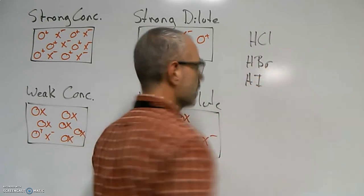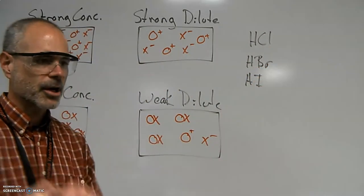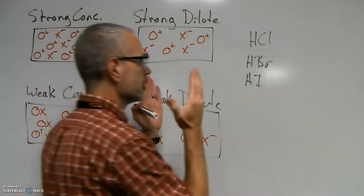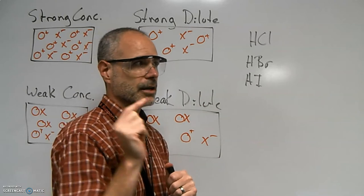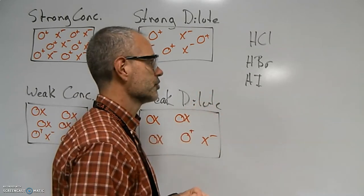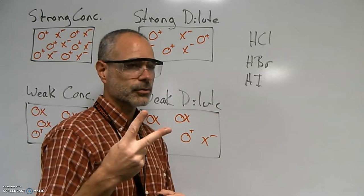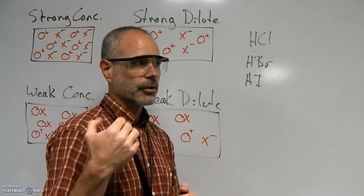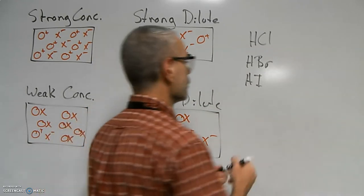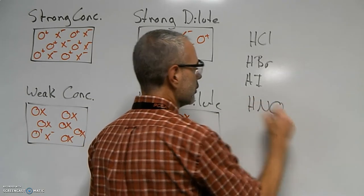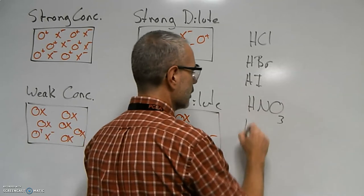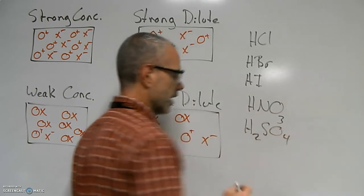and HI. These three, and again if you kind of memorize them in a certain way, these three are binary acids and they are halogens. So those three are in the halogen group. There are two others which are strong industrial acids, and those are nitric acid and sulfuric acid.